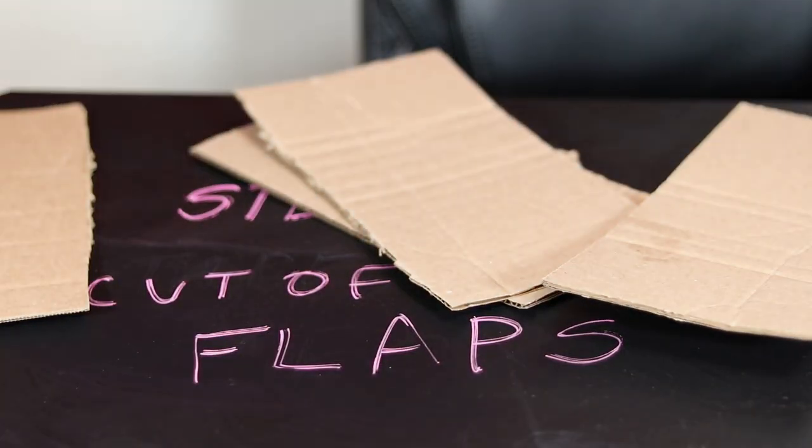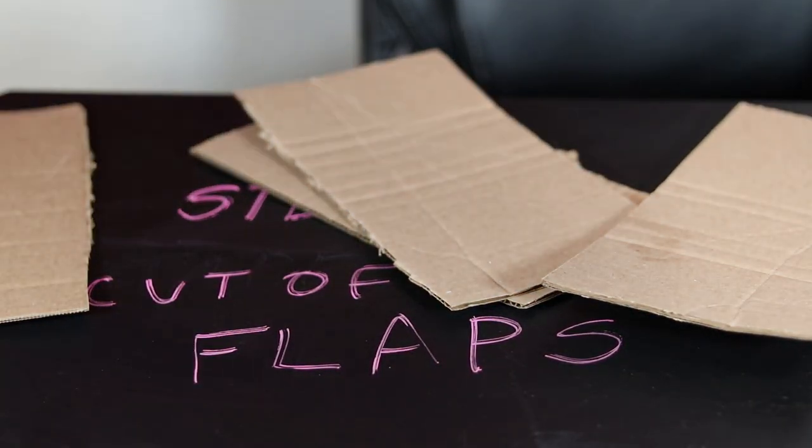Since we need our box hollow from the top for step two we're just gonna cut off the extra flaps which we usually tape down on a regular cardboard box.